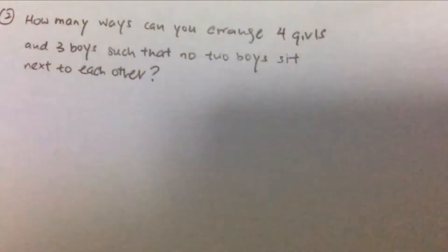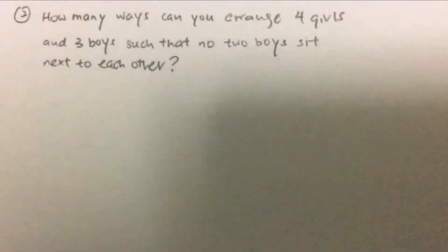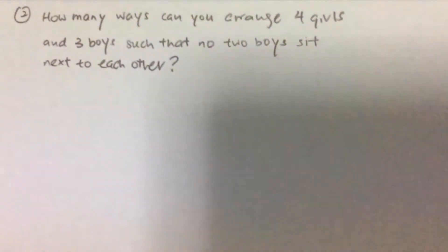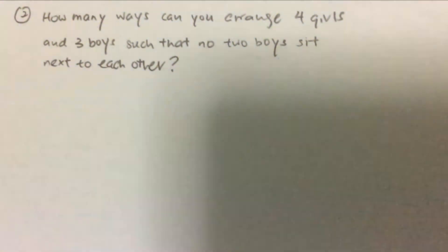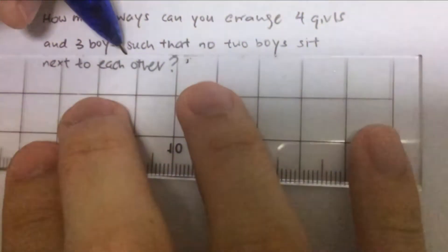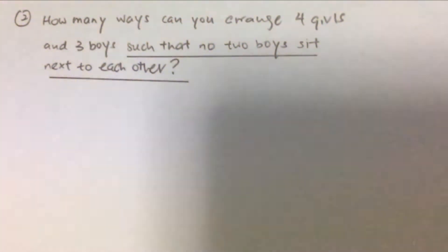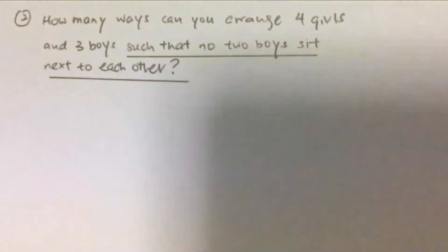Question number two: how many ways can you arrange four girls and three boys such that no two boys sit next to each other? The clue here is that no two boys sit next to each other, which means the girls can sit next to each other.